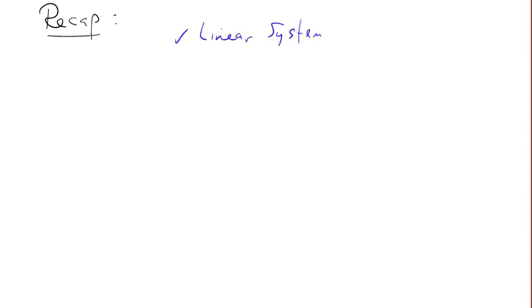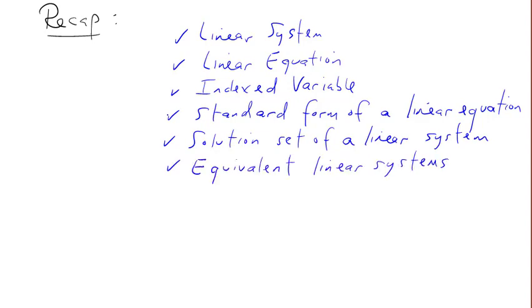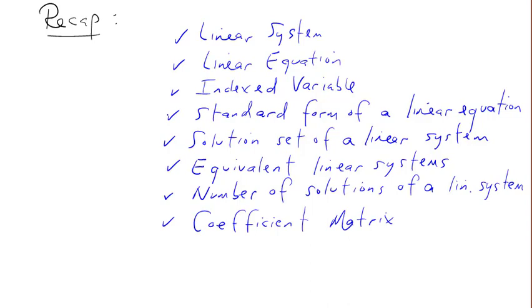Let's briefly review what we covered in this video: the definition of linear system and linear equation, index variable, standard form of a linear equation, solution set of a linear system, equivalent linear systems, number of solutions of a linear system, coefficient matrix, and augmented matrix.